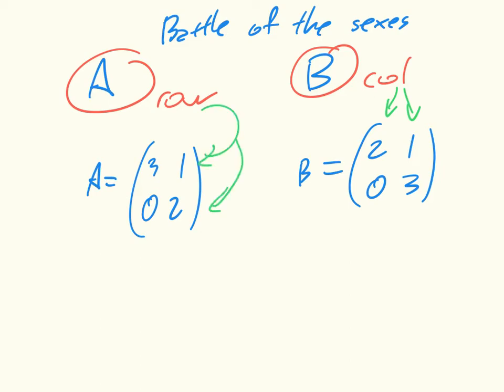And then we just read off from the matrices the payoffs to each player. So, for example, if the first player chooses the first row and the second player chooses the second column, then we are at this coordinate here.